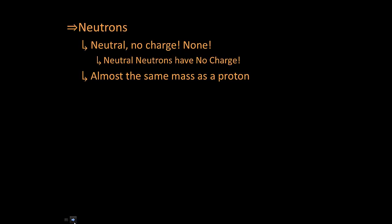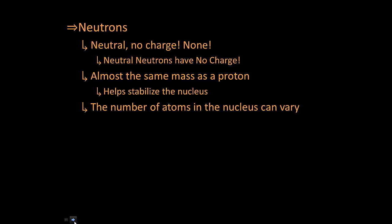Their role is to stabilize the atom. They're almost the same mass as a proton. They're a little bit more massive than a proton, but not enough to care about. And all they do is they help hold the protons together in the nucleus, help make the atom more stable. But there's no rule that says the nucleus has to have a fixed number of neutrons.